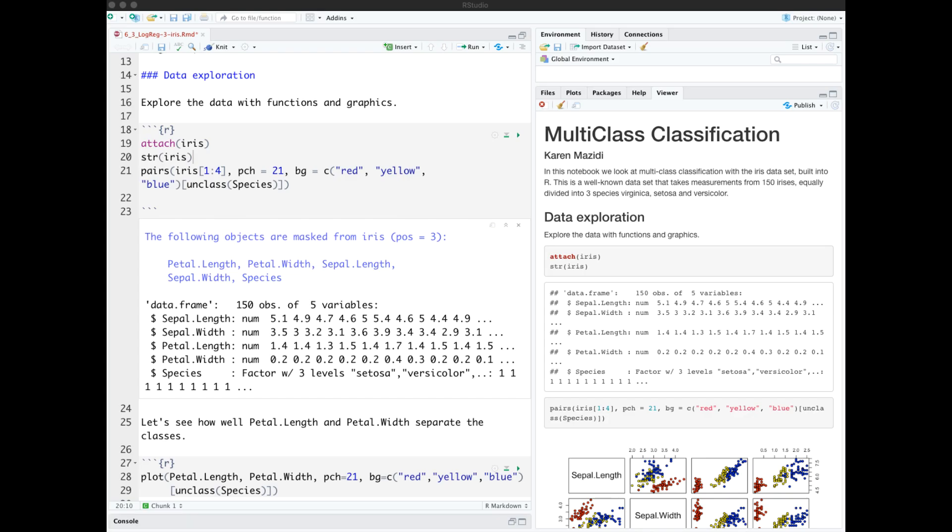The R logistic regression function we used in the last video does binary classification. What if we need to do multi-class classification? We can perform what is called one versus all classification. This notebook demonstrates that on the built-in iris dataset.